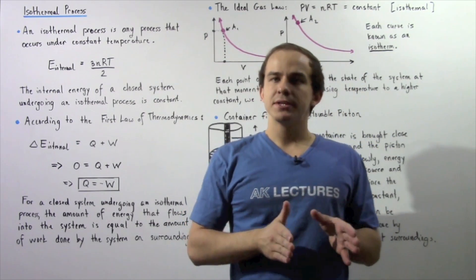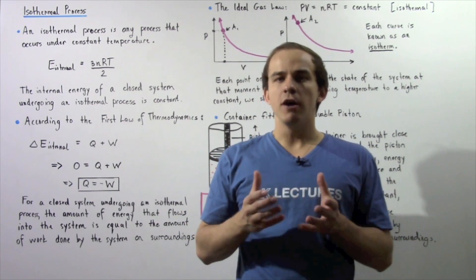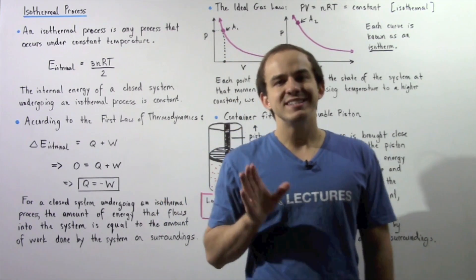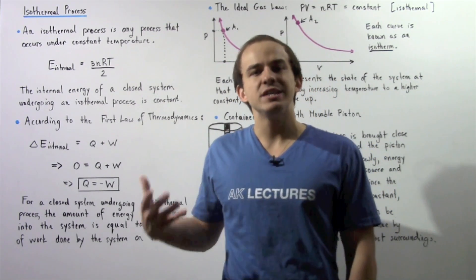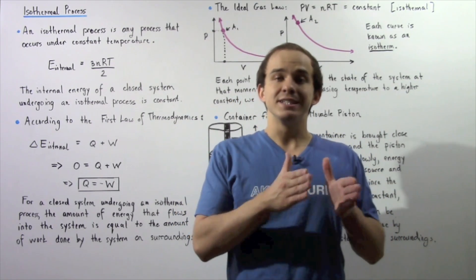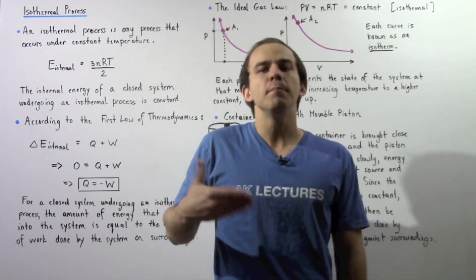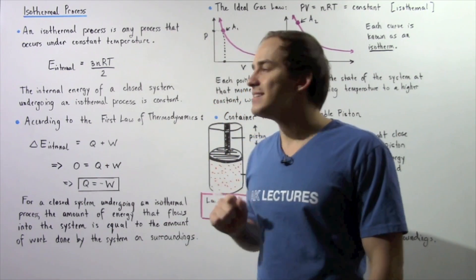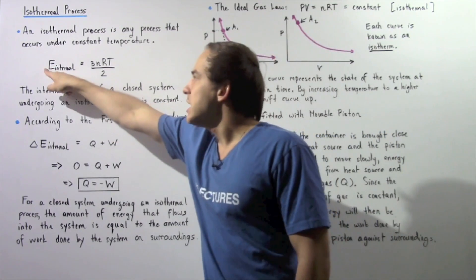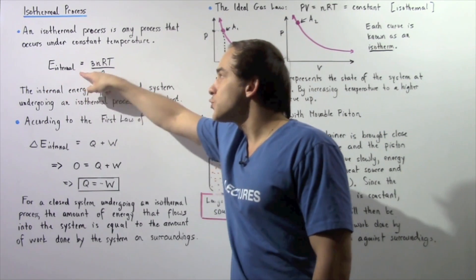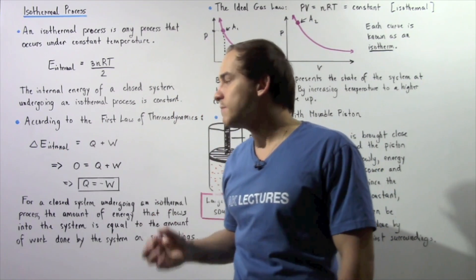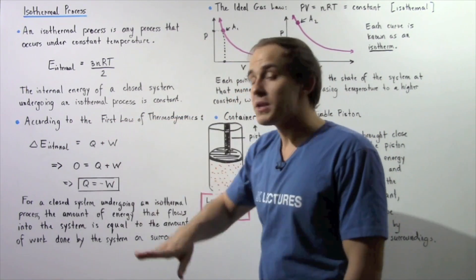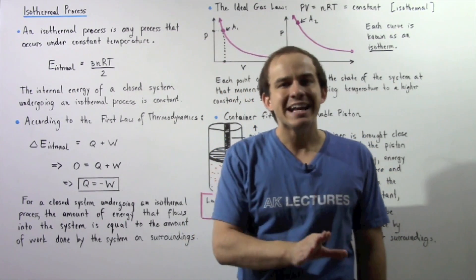According to the first law of thermodynamics, the change in internal energy of our closed ideal gaseous system equals the sum of q and w, where q is the energy that flows into our system as a result of a temperature difference, and w is the work done on or by our gaseous system. Since we're in an isothermal process, the internal energy remains constant, so the change in internal energy is zero. Therefore, zero equals q plus w, which implies that q equals negative w.